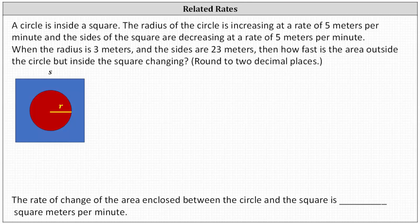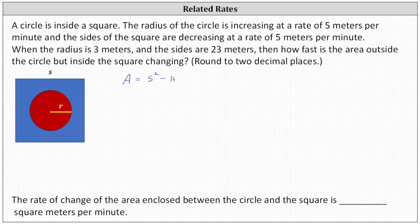Because we're looking for how fast the area outside the circle and inside the square is changing, we're looking for how fast the blue area is changing, which is equal to the area of the square minus the area of the circle. So the blue area A equals s squared minus pi r squared.